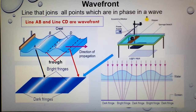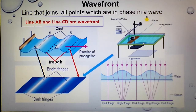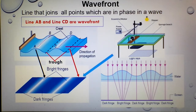If you observe the pattern formed on the white screen below the ripple tank, you will see bright and dark fringes alternately. When using a ripple tank to study wave motion, there is a motor connected to a vibrator, which is connected to a power supply, and we also need a lamp. We put some water into the tank, and when we turn on the switch, we can observe the pattern formed on the screen.